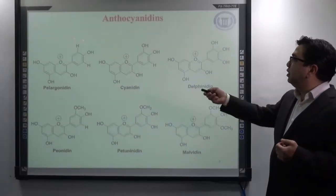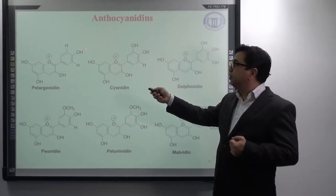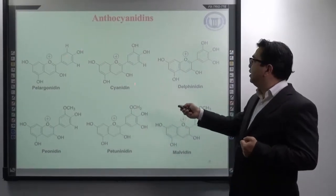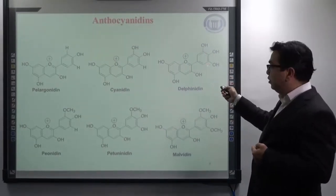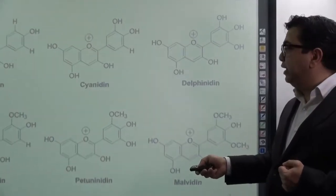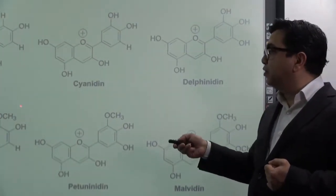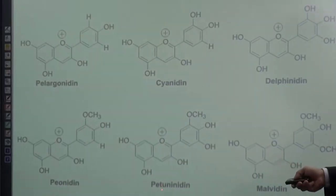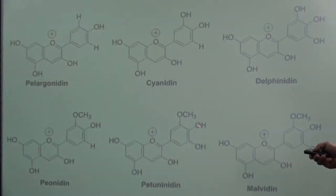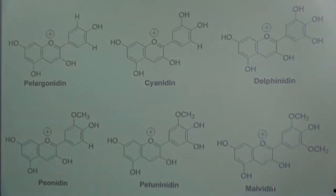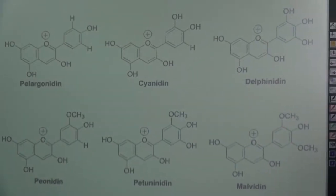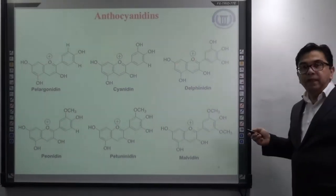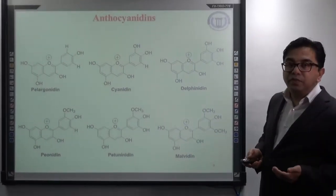Have a look at the structures: pelargonidine has only one hydroxyl group at ring B; cyanidine has two OH groups; delfinidine has three OH groups attached to ring B. When you come to peonidine, it has one methoxy group attached at the third position of ring B. Petunidine contains one methoxy and two OH groups at ring B. And malvidine contains two methoxy groups — one at the third position and another at the fifth position of ring B. So all six of them mainly differ in their substitution pattern at ring B, and these six are the most commonly found in nature.